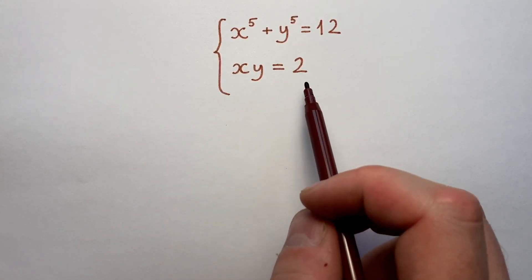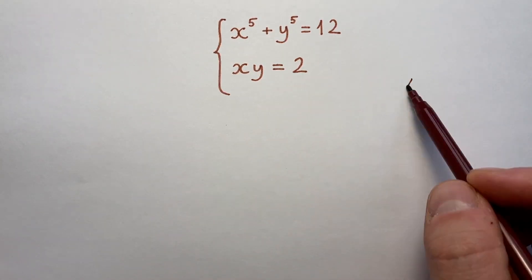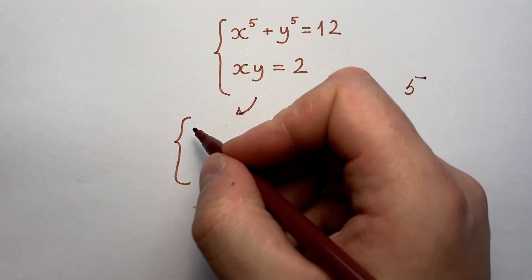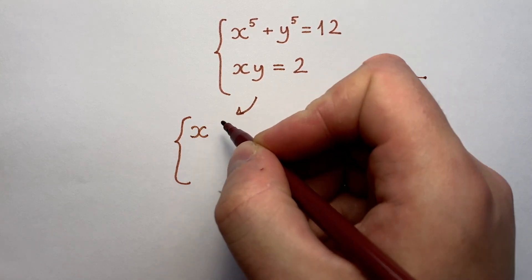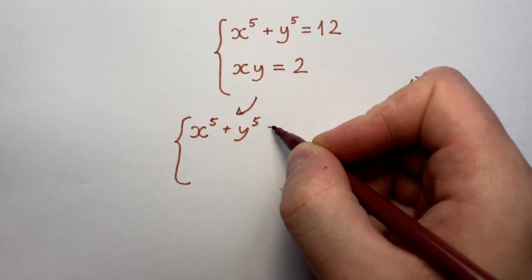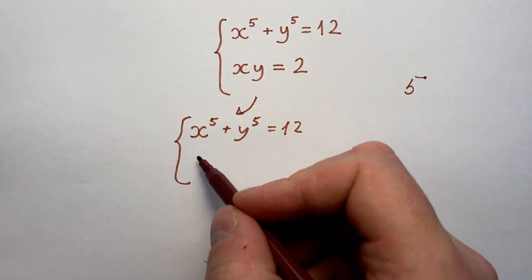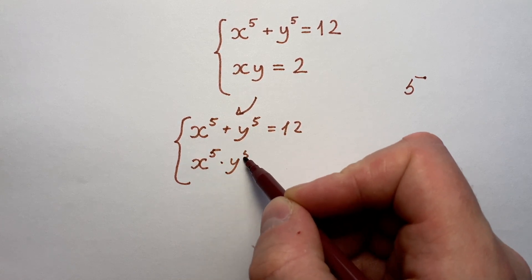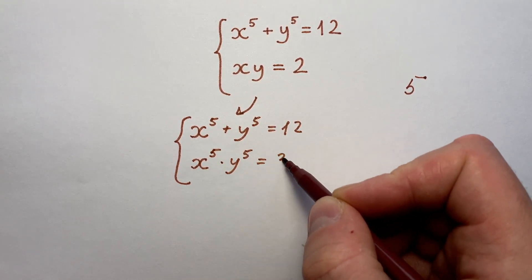Let's take the second equation from this system to the power of 5. So from this moment we have a system of two equations: x to the power of 5 plus y to the power of 5 equals 12, and x to the power of 5 times y to the power of 5 equals 32.